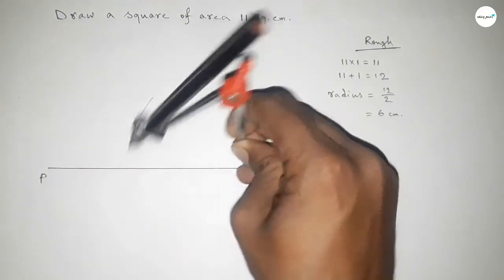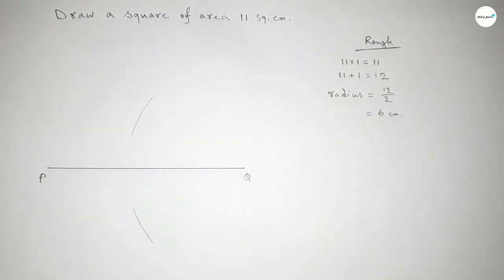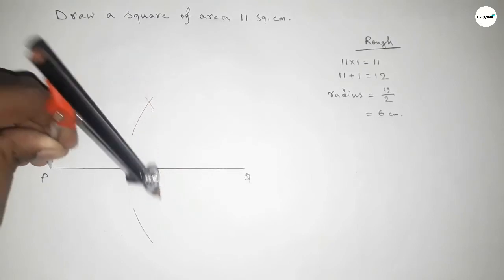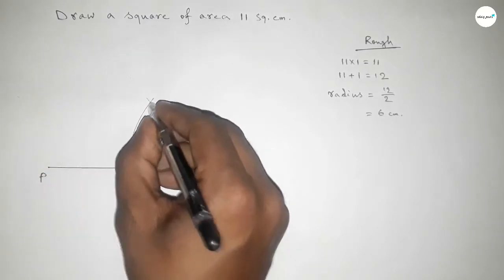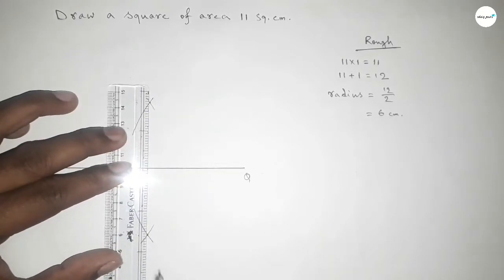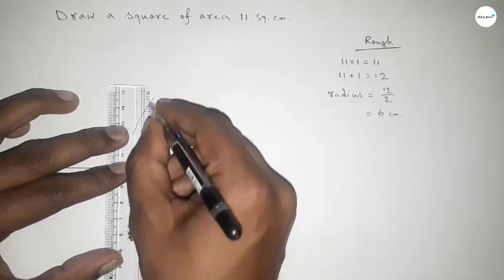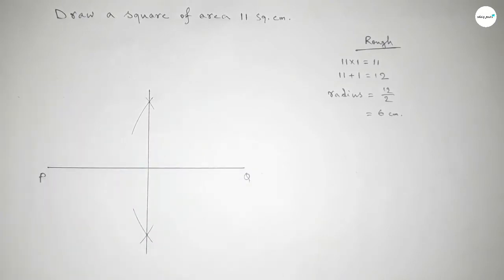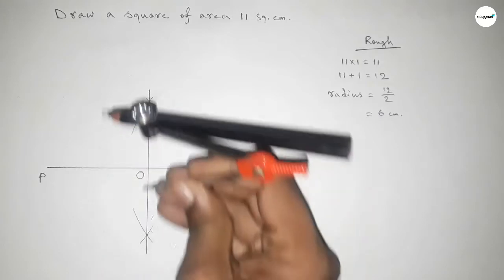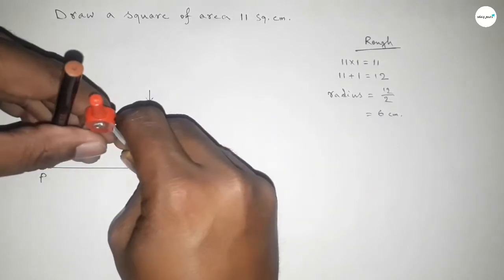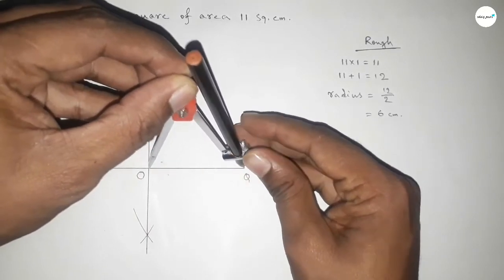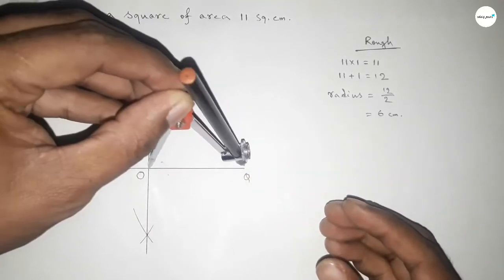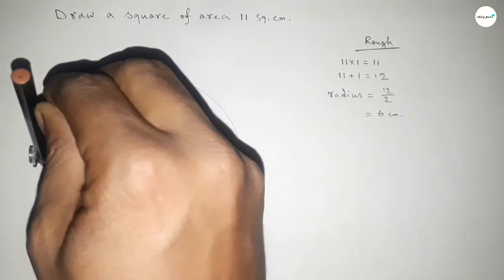Taking greater than half of PQ, drawing arcs with the same compass length from both ends, which intersect at two points. Joining those points bisects PQ at center point O. Now taking the lengths OP and OQ to draw the semicircle with radius 6 centimeters.